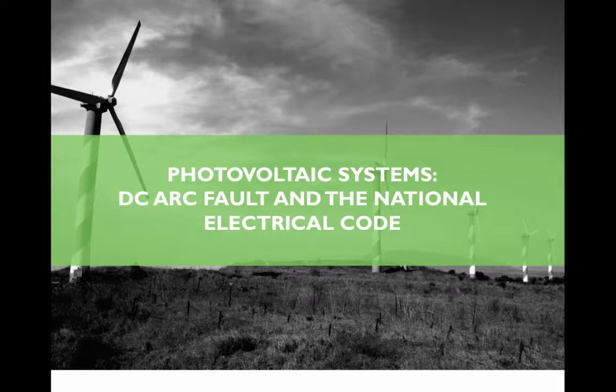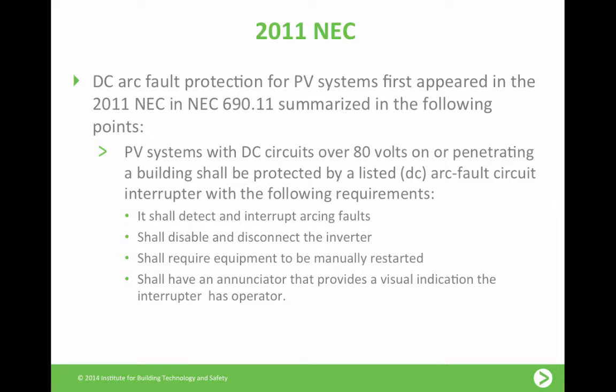So what does the National Electric Code have to say about DC arc faults? Prior to 2011, with regards to PV systems, there really was no provision within the NEC that mandated any kind of requirement. However, in 2011 DC arc fault protection first appeared: DC circuits over 80 volts on or penetrating a building shall be protected by a listed DC arc fault circuit interrupter. It shall detect and interrupt arcing faults — those sensors within the system measure through noise interpretation the fluctuation of current, which is symptomatic of an arc fault in the circuit.